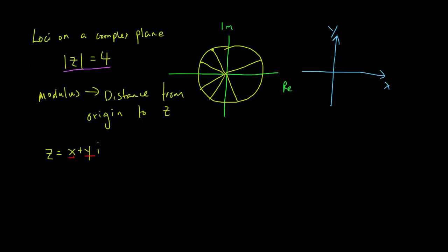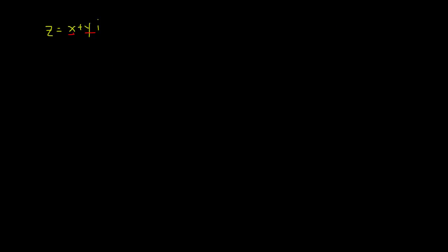So let us try and solve the equation for the circle. So we put X and YI into Z, so that will be modulus X plus YI equals to 4. Now for any modulus, when we want to find a modulus, what we need to do is that we have to take the Pythagorean theorem.